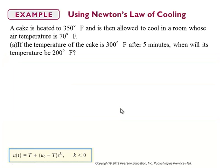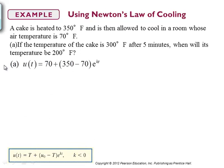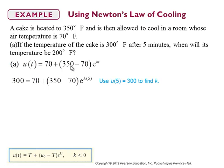Let's tackle the cake example. A cake heated to 350°F is allowed to cool in a room whose air temperature is 70°F. So U₀ = 350 and big T = 70. Part A: if the temperature of the cake is 300°F after five minutes — that gives us enough information to solve for k — then when will the temperature be 200°F? We plug 70 in for big T and 350 for U₀, then use the condition that at five minutes the temperature is 300°F, plugging in 5 for T and 300 for U.